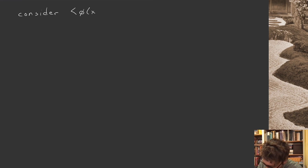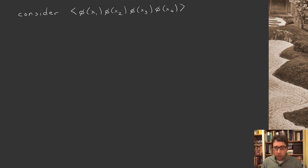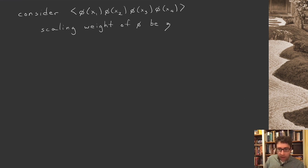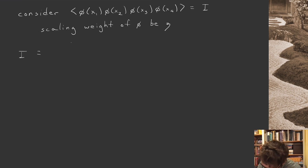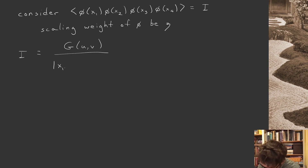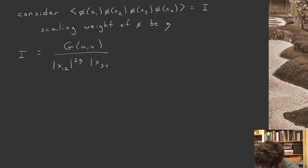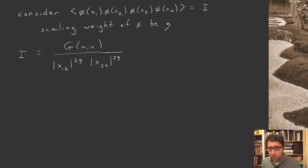For simplicity, let's consider a four-point function of four identical scalar primaries phi(x1), phi(x2), phi(x3), phi(x4), inserted at four separate points. Because I want to reserve the capital Greek letter delta for the sums over conformal blocks, let's let the scaling weight of phi be eta. We can write this four-point function as g(u, v) divided by a prefactor forced on us by conformal symmetry: the difference between points 1 and 2 raised to the 2-eta power, times the difference between points 3 and 4 raised to the 2-eta power. That's all conformal symmetry alone tells us.